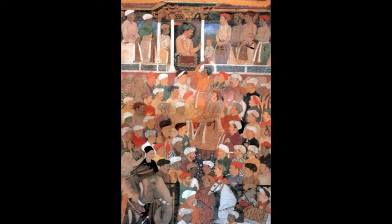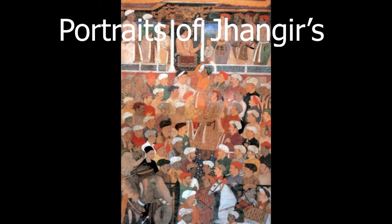Emperor Jahangir was influenced by European art. The tradition of book illustration assumed secondary importance to the portrait during Jahangir's reign, because of the Emperor's own preference for portraits. Among the most elaborate works of his reign are those showing Jahangir surrounded by numerous courtiers.